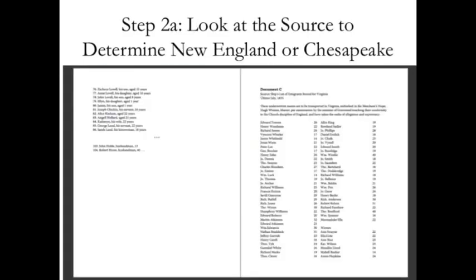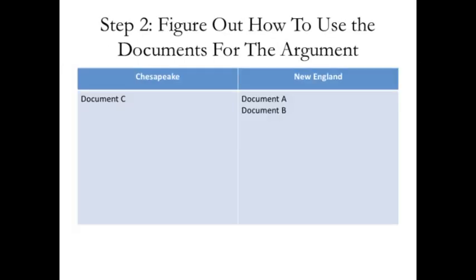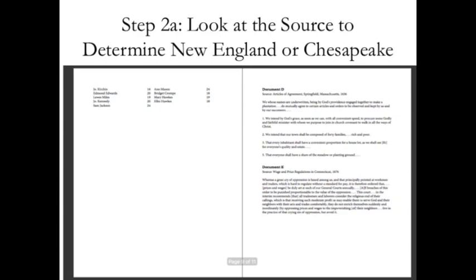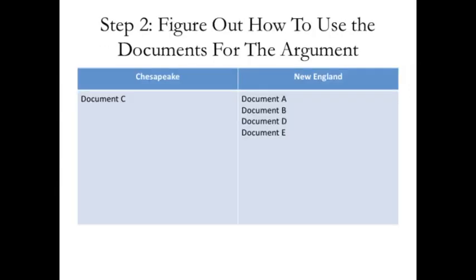Document C is another list of people going to Virginia. Because Virginia is a southern colony, we put that with the Chesapeake region. For D, it says Springfield, Massachusetts — the Articles of Agreement for Springfield, Massachusetts. Massachusetts is in the New England colonies, so document D is a New England document. Document E covers wage and price regulations in Connecticut. Connecticut is not in the south, so that's also a New England colony document. Right now we have just one document — document C — for the Chesapeake, and documents A, B, D, and E all belong to New England.